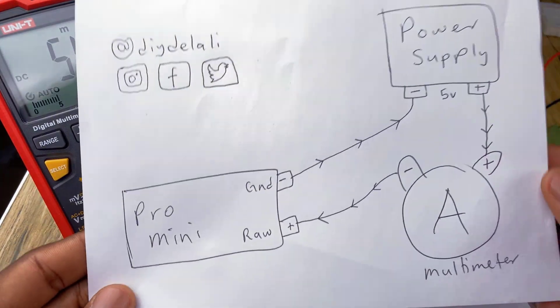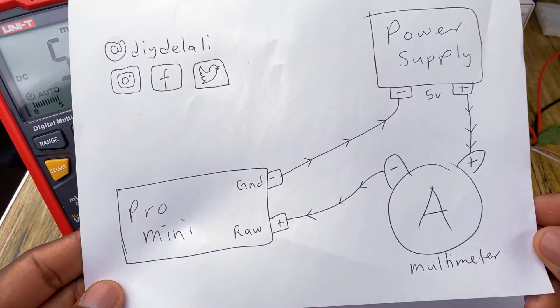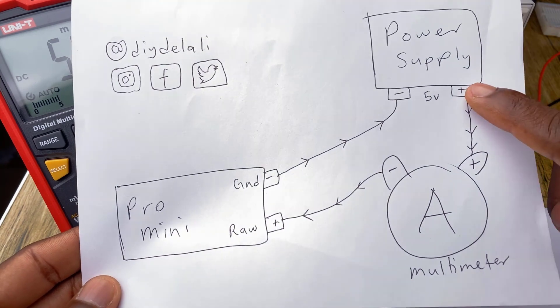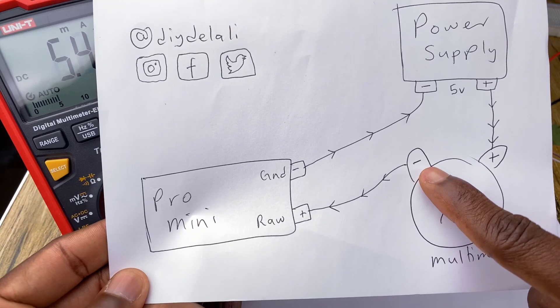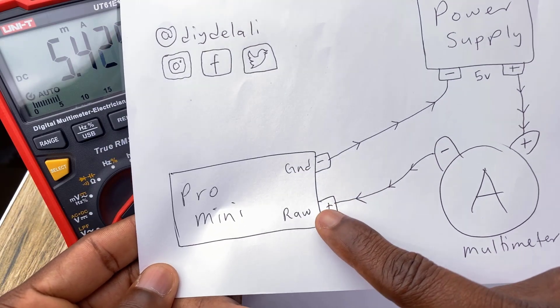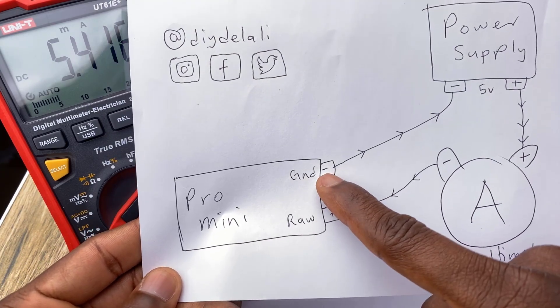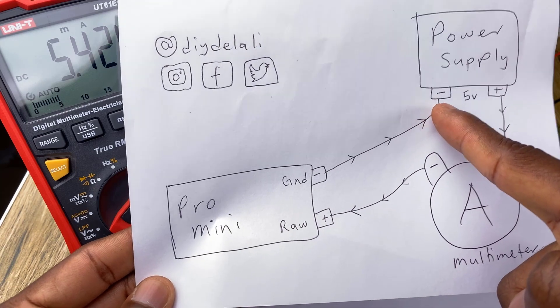So this is how everything is wired in order for us to read the current consumption. The 5V from the power supply goes to the positive of the multimeter and then the negative of the multimeter goes to the raw pin of the Arduino Pro Mini and then from the ground back to the power supply's negative.